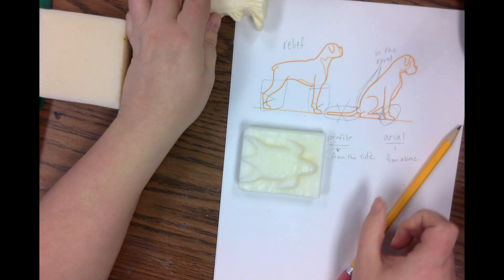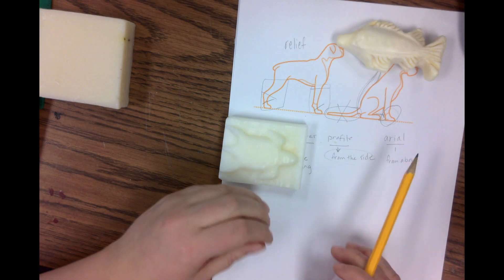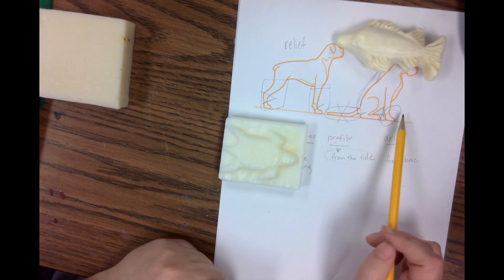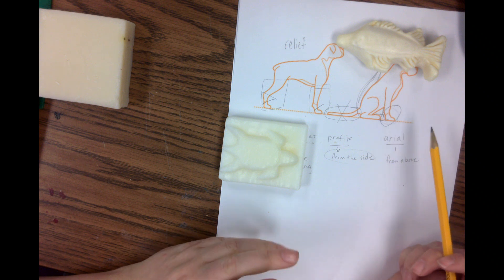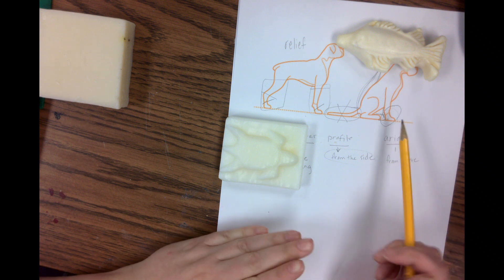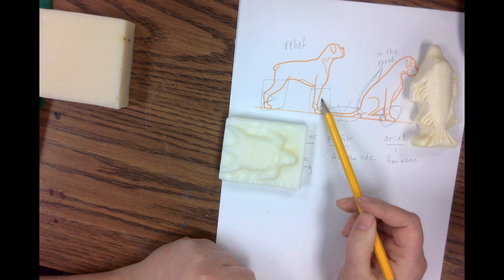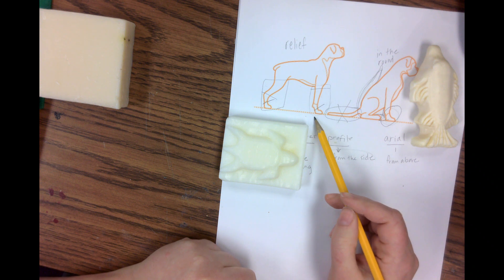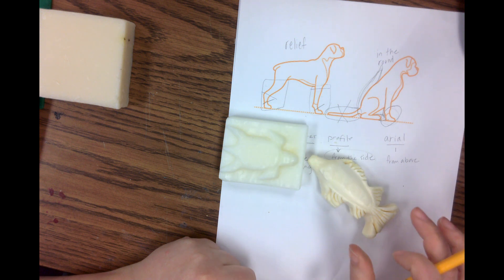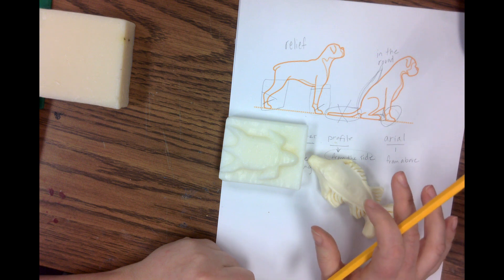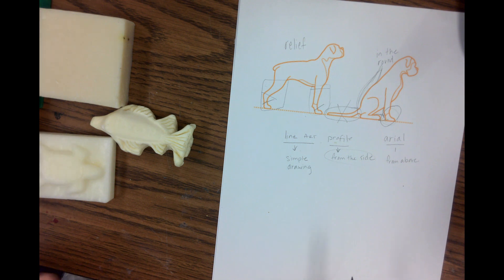So we've realized that we can carve any way we want. We can do a relief, we can do it in the round. But we have to pick a drawing, an inspiration image, that is going to support what we want to do. So either you say I really want to do something in the round, and you choose something that supports that—that doesn't have a bunch of real delicate stuff sticking off on its own. Or you say I found a drawing I really want to do, and because I like this one, I'm going to use that. So I hope that makes sense.